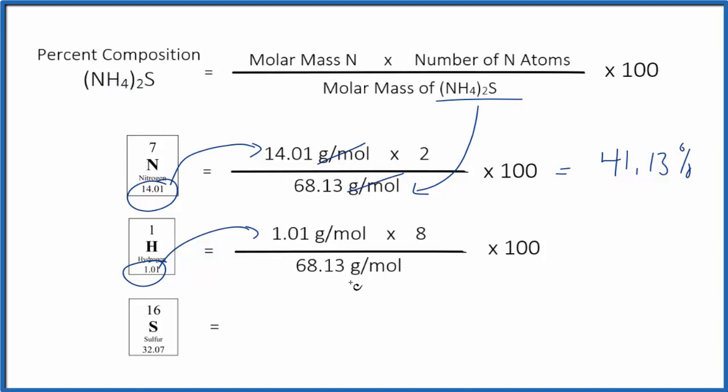We divide everything by the molar mass of ammonium sulfide, and then multiply by 100. So we'll multiply, get that number, divide, and then multiply by 100 to give us 11.86%. Now pause and calculate the percent composition by mass for the sulfur in ammonium sulfide.